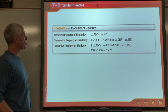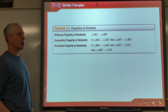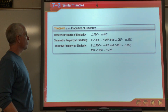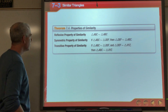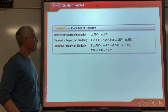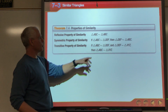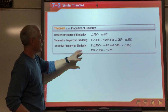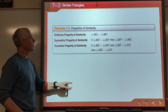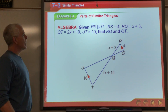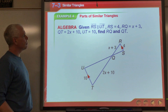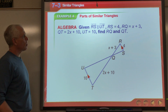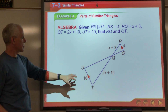This is just a recap of the properties of similarity we talked about: the Reflexive property — a triangle is similar to itself; the Symmetric property — if ABC is similar to DEF then DEF is similar to ABC; and the Transitive property.